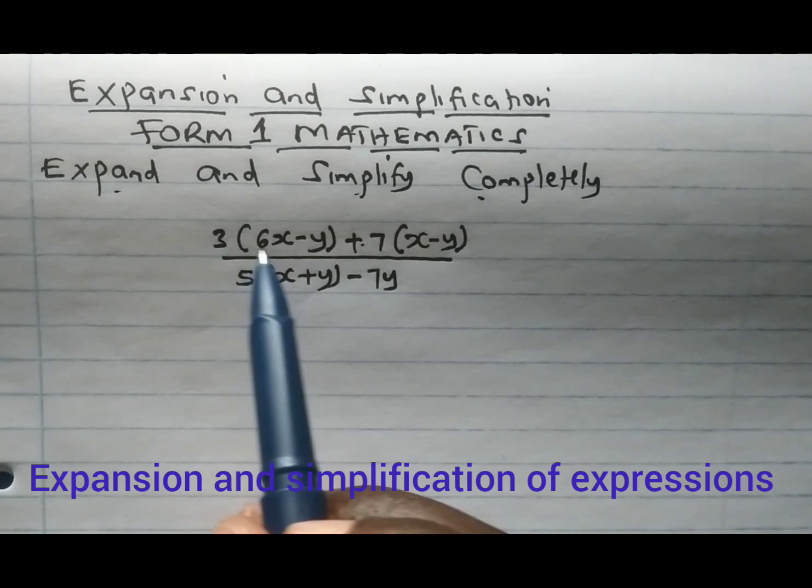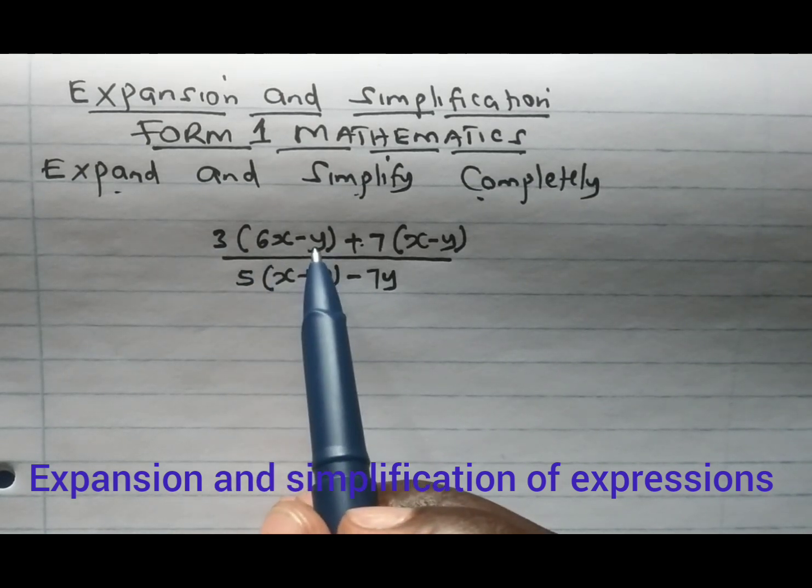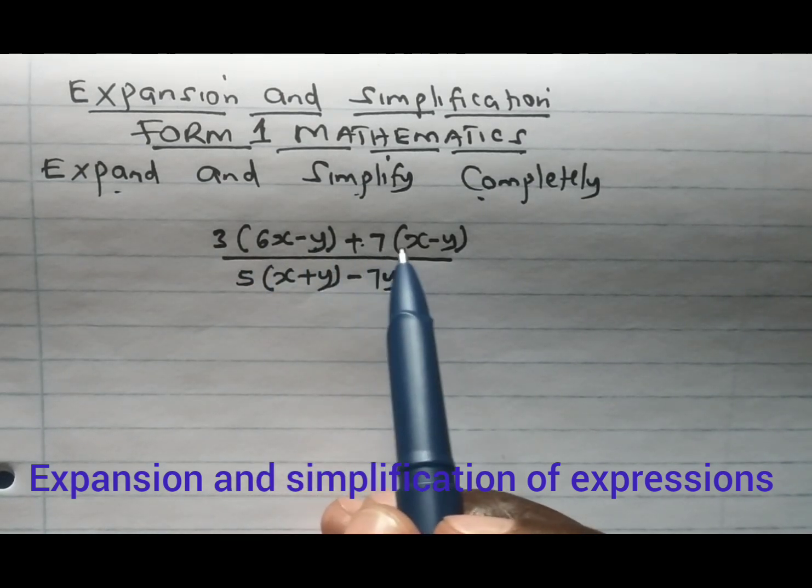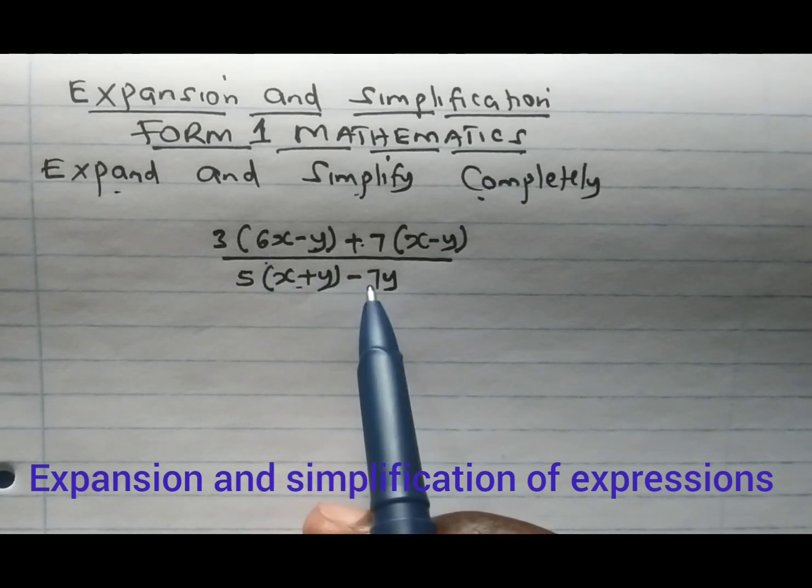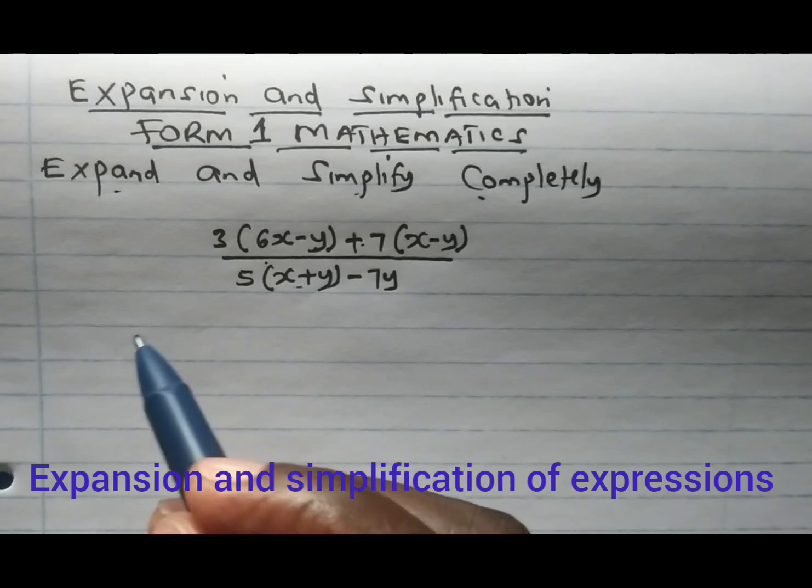We have 3 into 6x minus y plus 7 into x minus y, divided by 5 into x plus y minus 7y.